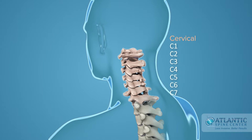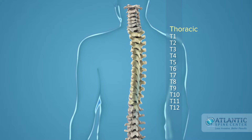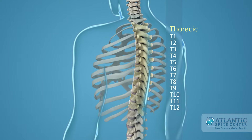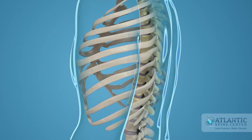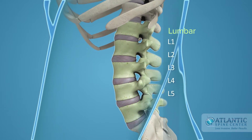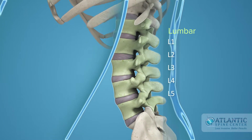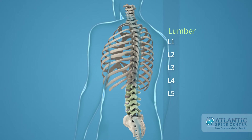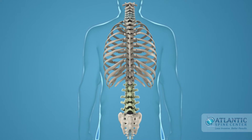T1 through T12, thoracic — the 12 vertebrae that are joined by ribs to form your rib cage. L1 through L5, lumbar — your five sturdy lumbar vertebrae carry most of the weight of your upper body and provide a stable center of gravity when you move.